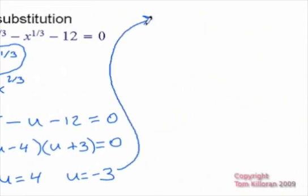So wherever you see u, now we're going to go back to x to the one-third equals 4, and also x to the one-third equals negative 3.